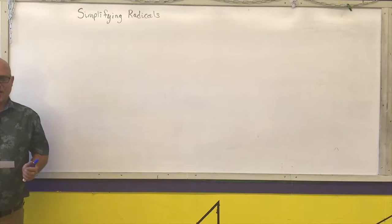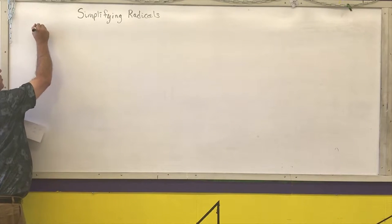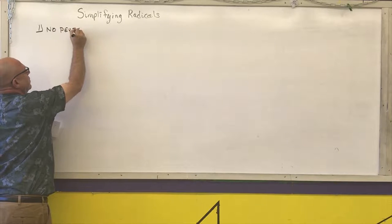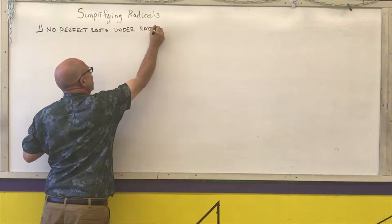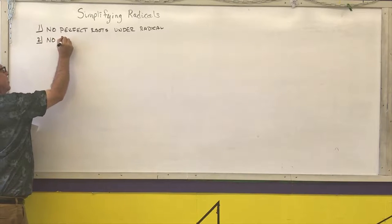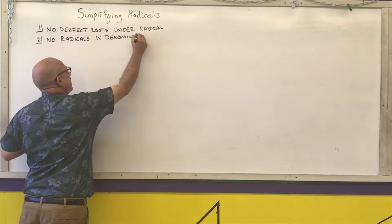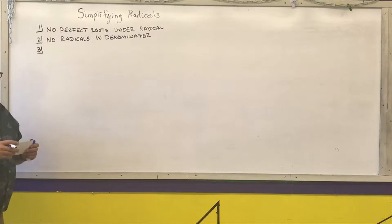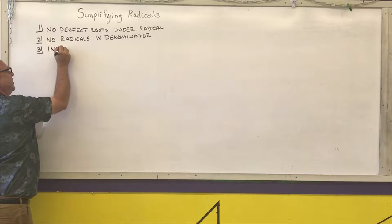For simplifying radicals, most of this is going to be example problems after I talk about the rules of what it means to have a simplified radical. Our rules are that we're not allowed to have any perfect roots under the radical, no radicals in the denominator, and when we start talking about rational exponents — which will probably be the next section in Algebra 2 or College Algebra — the index is reduced.